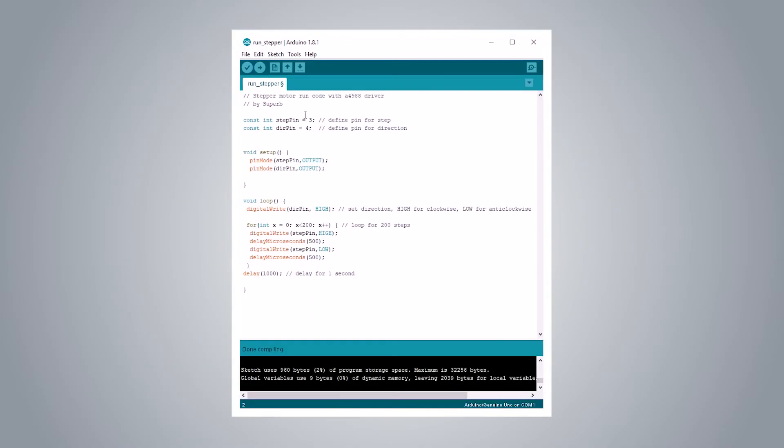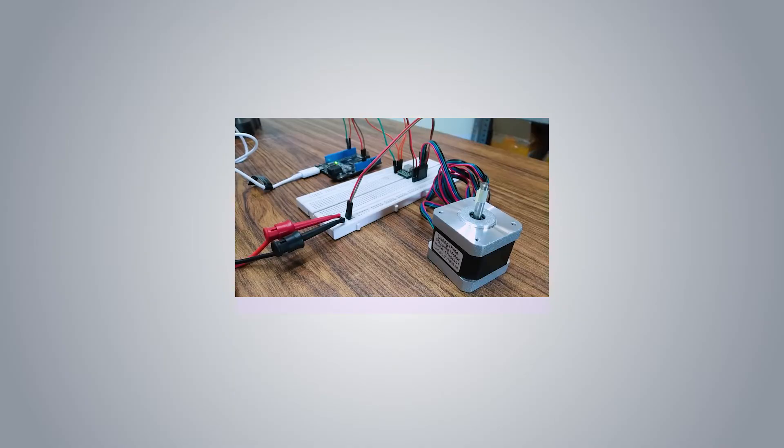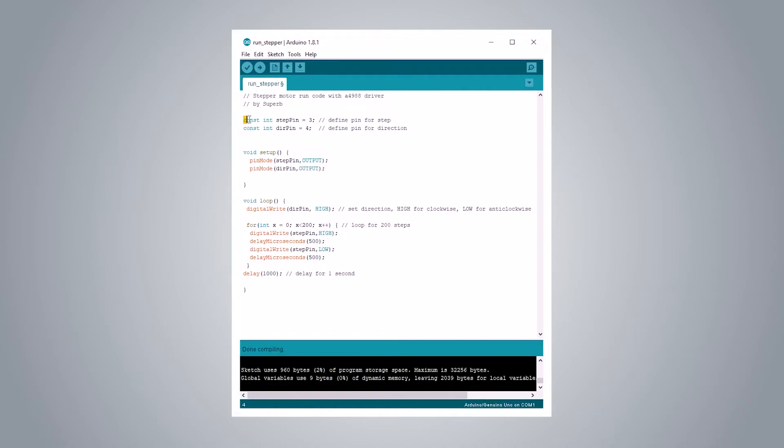Now let's see the code and get the motor running. First we will run the sample code to run a full rotation and pause for 1 second. The NEMA 17 has a step angle of 1.8 degrees. So it requires 200 steps to complete one full rotation. We will define the pins for step and direction on pin 4 and pin 3.